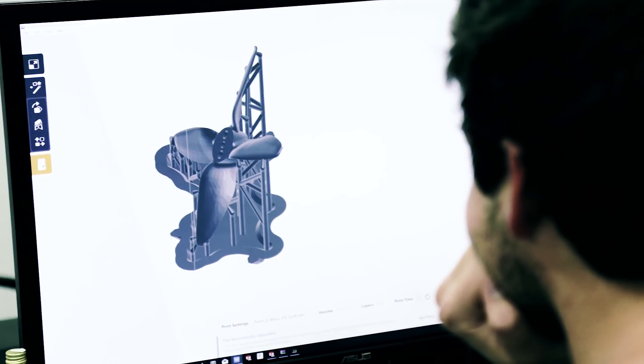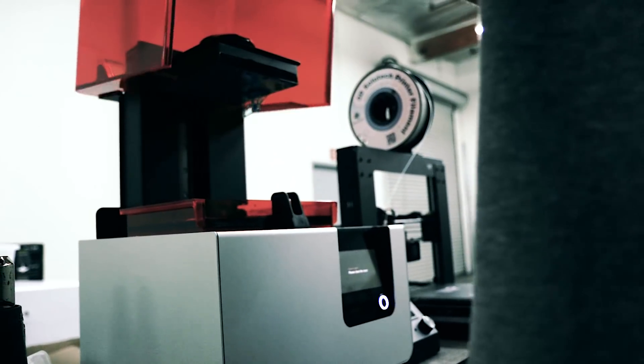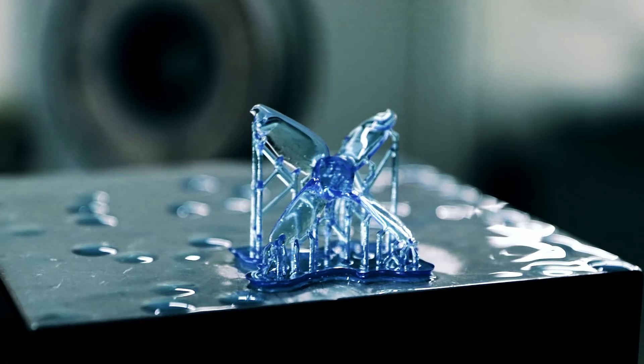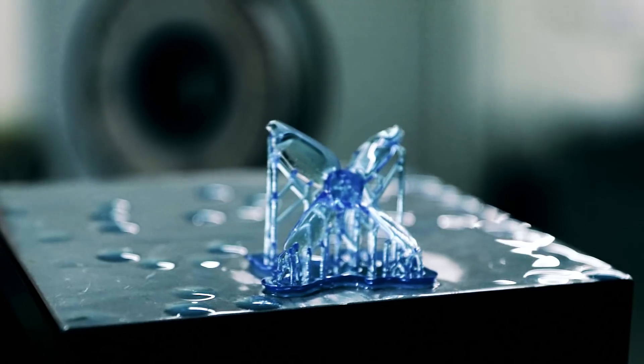Usually we start our first initial prototype with an SLA print, print out a couple sets, cure them, and then a long tedious task of sanding them down and balancing them, and then initial flights. What's amazing with SLA printers is that we can print out a design the same day, have a test the next day, and we can iterate through designs very quickly. Once we decide on a blade design that we like, we then move forward with production and create some injection molds.